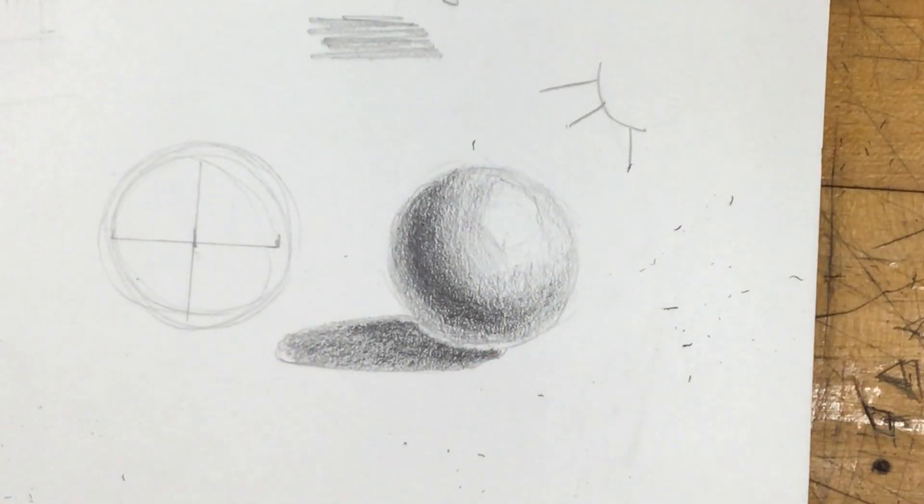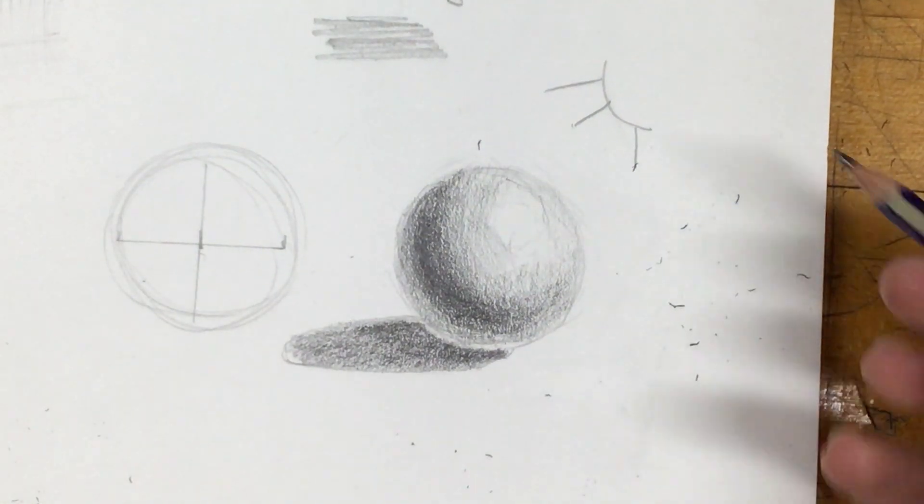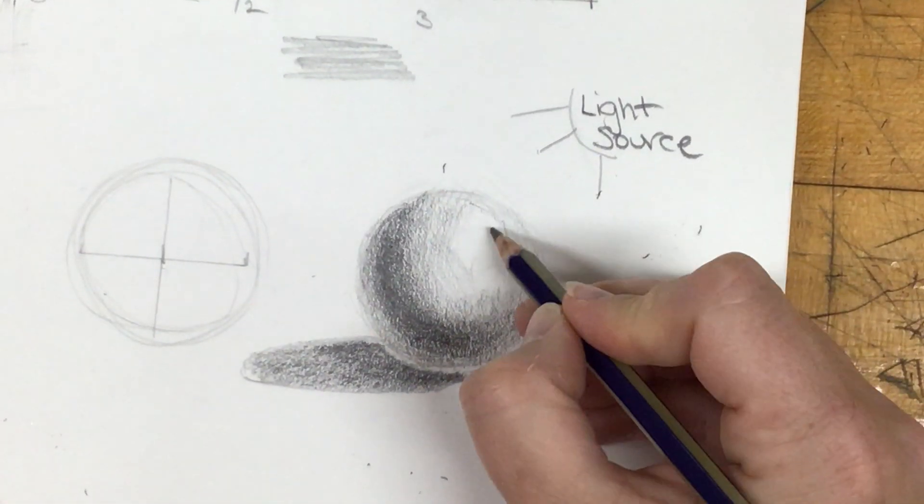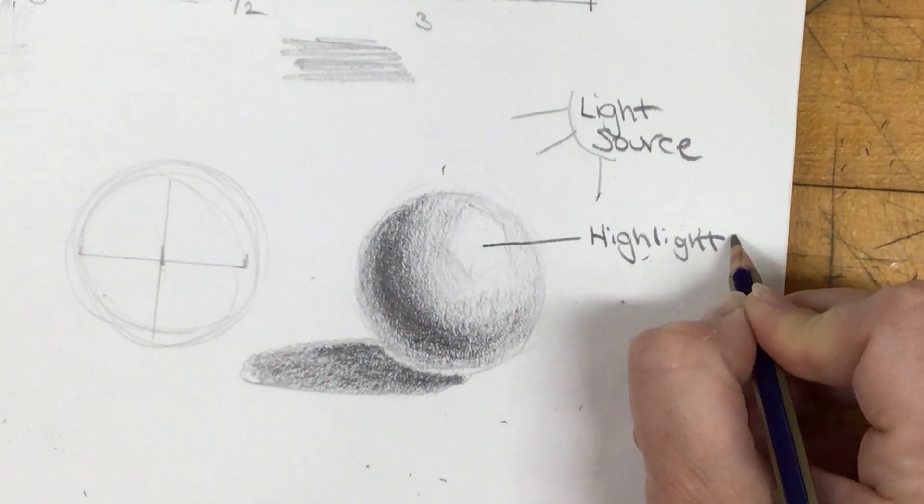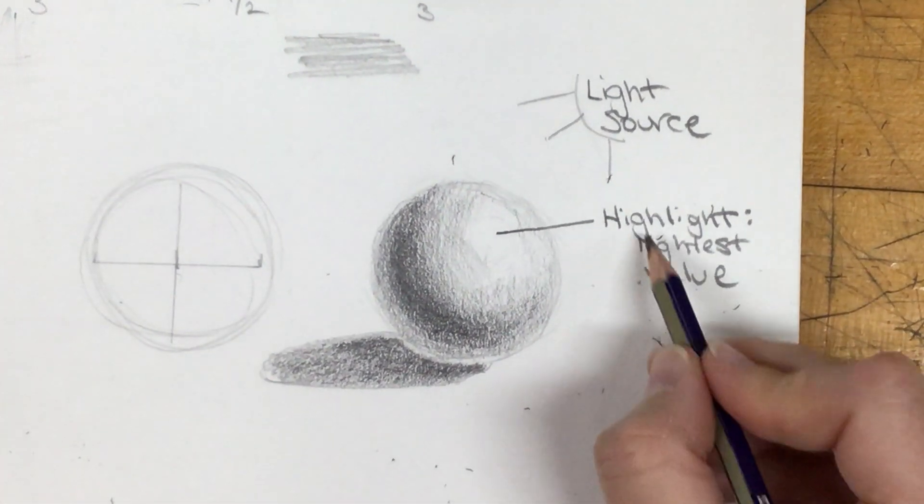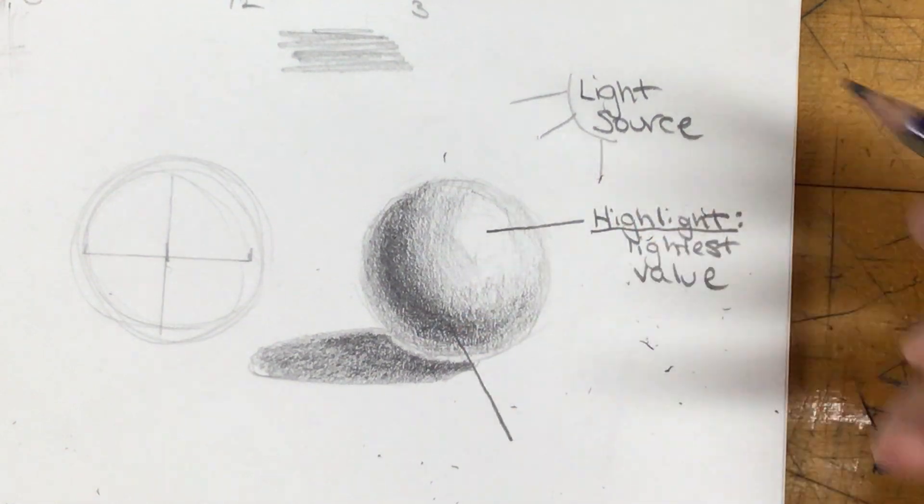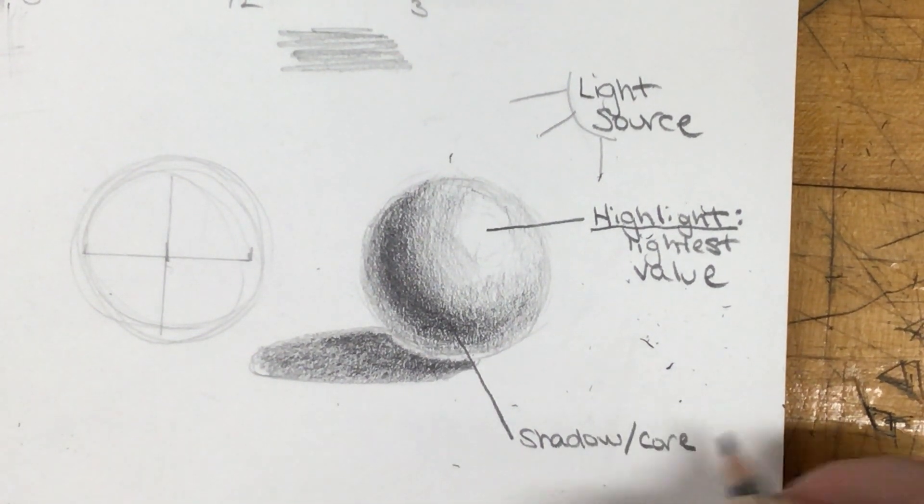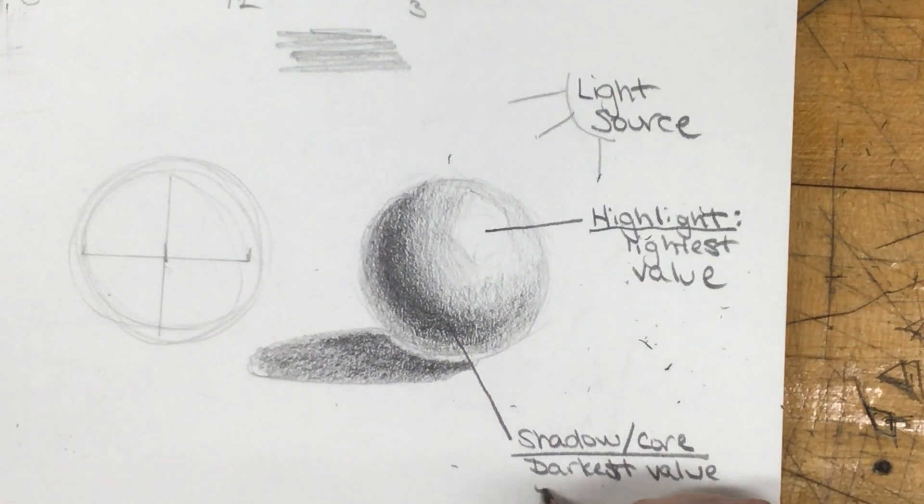All right, so we want to make sure, because I'm going to use this vocabulary with you. So this right here is our light source. This lightest value right here where it's white is called our highlight. So your highlight is going to be your lightest value. Then on the object, our darkest value is going to be our shadow or our core shadow. That's going to be your darkest value on object.